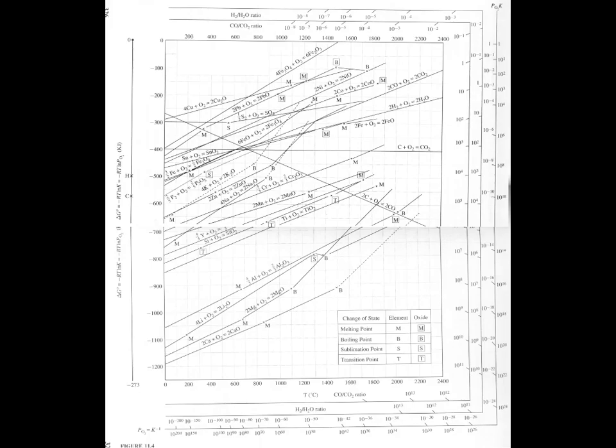So this is the Ellingham diagram. Let me point out a few features on here. The x-axis is usually given in degrees C, but then we have this y-axis here with 0 degrees C, and then this sort of second y-axis over here which represents 0 K, so negative 273 C.